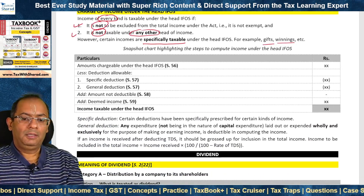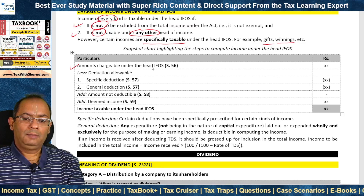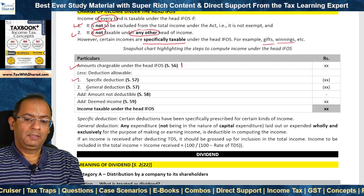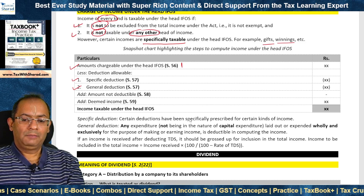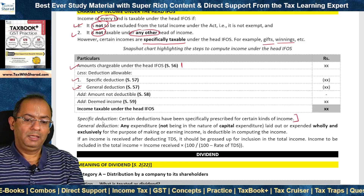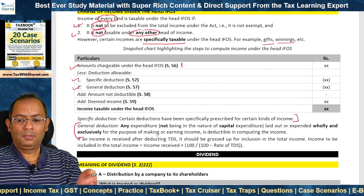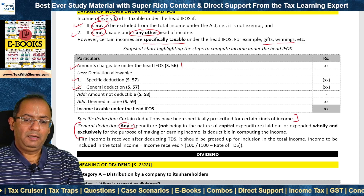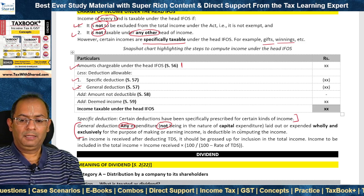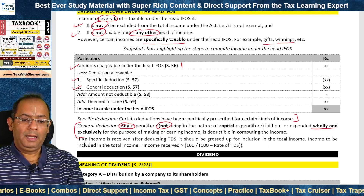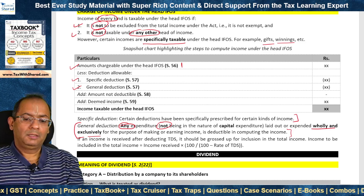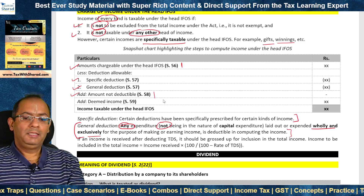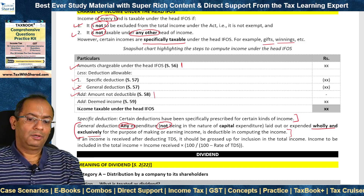A snapshot chart highlights the steps to compute income under this head. First, we figure out the amounts chargeable under Section 56. Then we allow deductions under Section 57 on two counts: specific deduction and general deduction. A specific deduction is specific to certain kinds of income. The general deduction refers to any expenditure not being in the nature of capital expenditure — that means revenue expenditure laid out or expended wholly and exclusively for the purpose of making or earning income. We then add back amounts which are not deductible listed under Section 58.